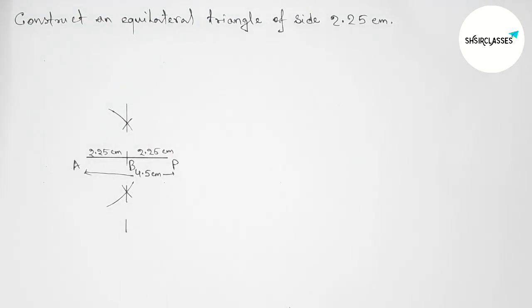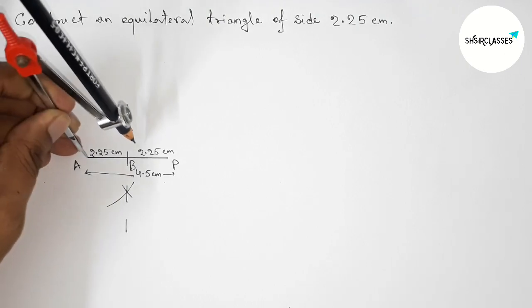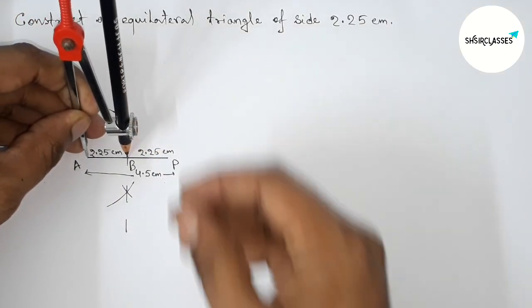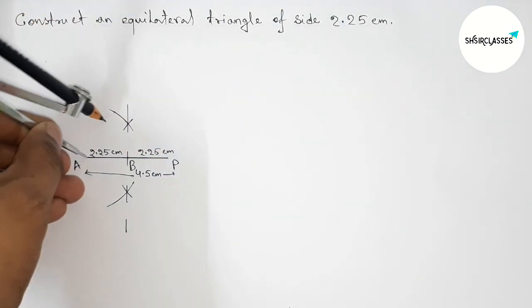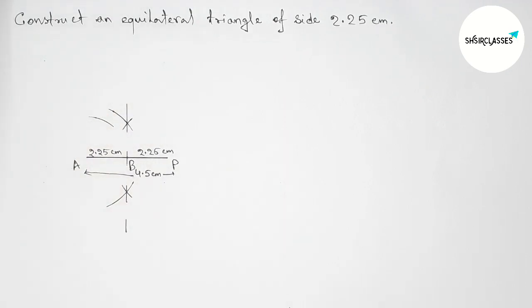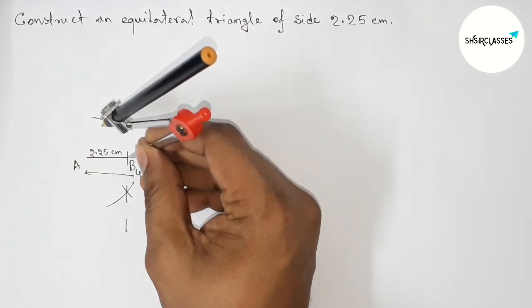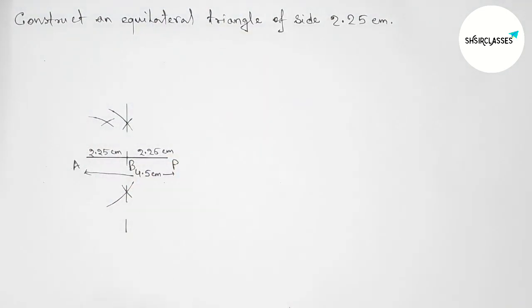Now taking the length AB that is 2.25 centimeter with the help of compass by this way. Perfect. Now drawing here arc again with same length and putting the compass on the point B and cut here. Okay, so here both the curve intersect here at a point C.